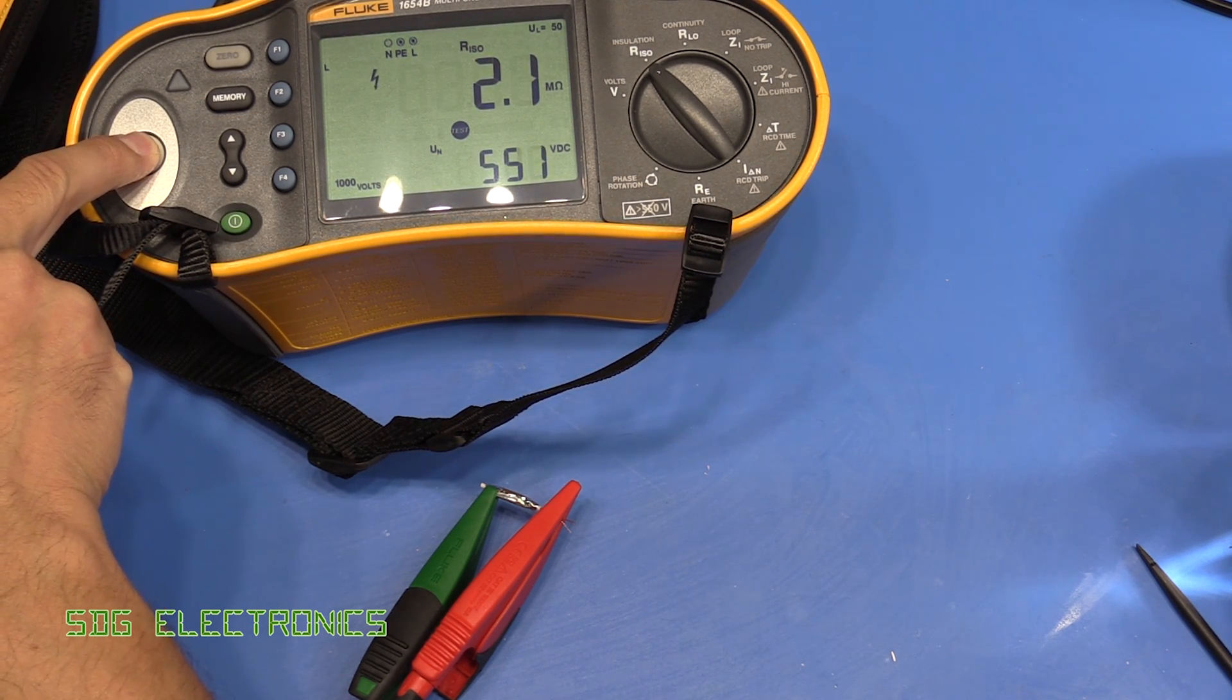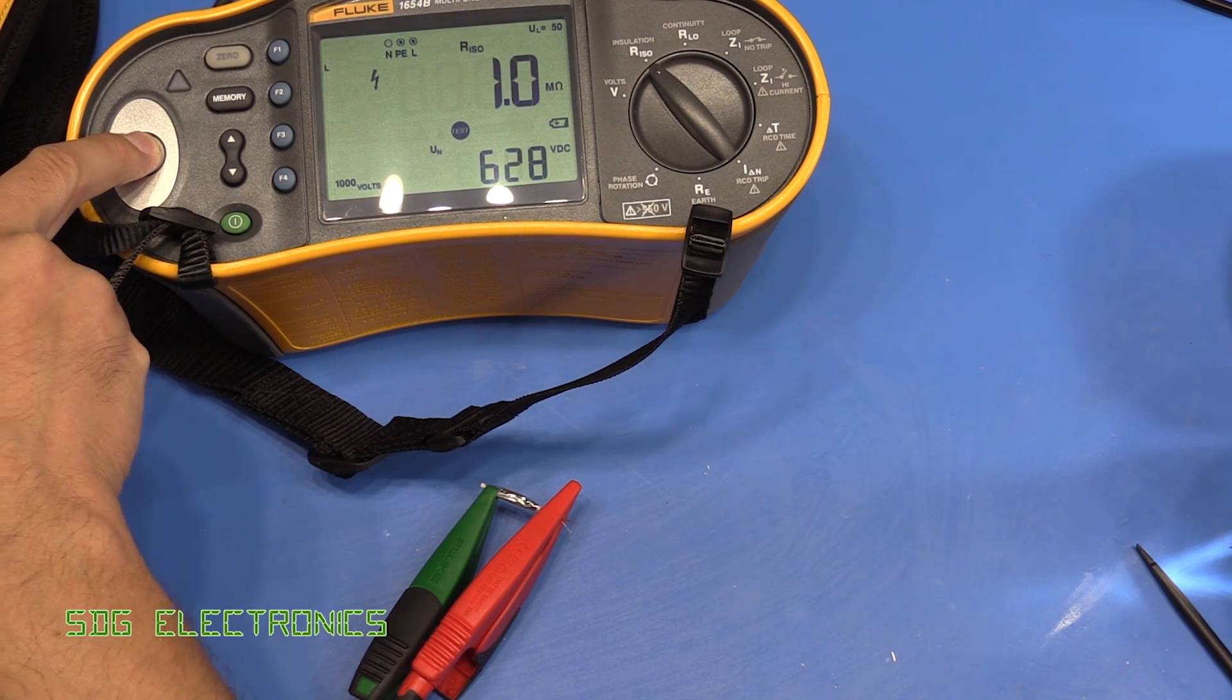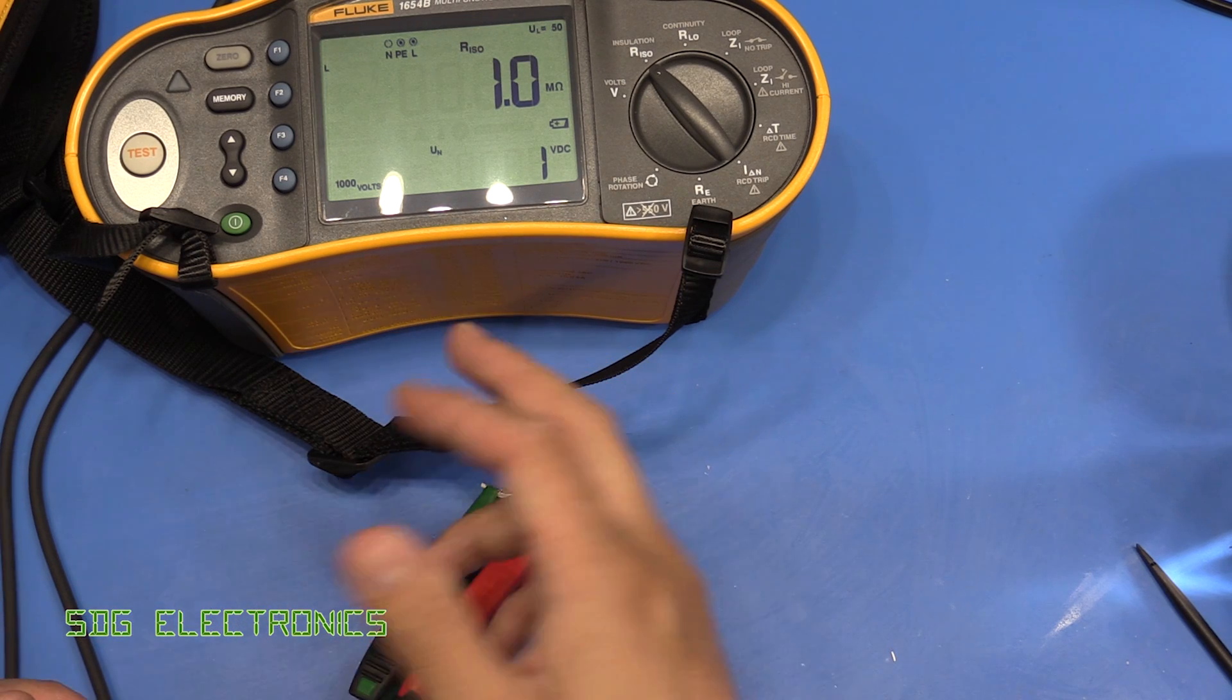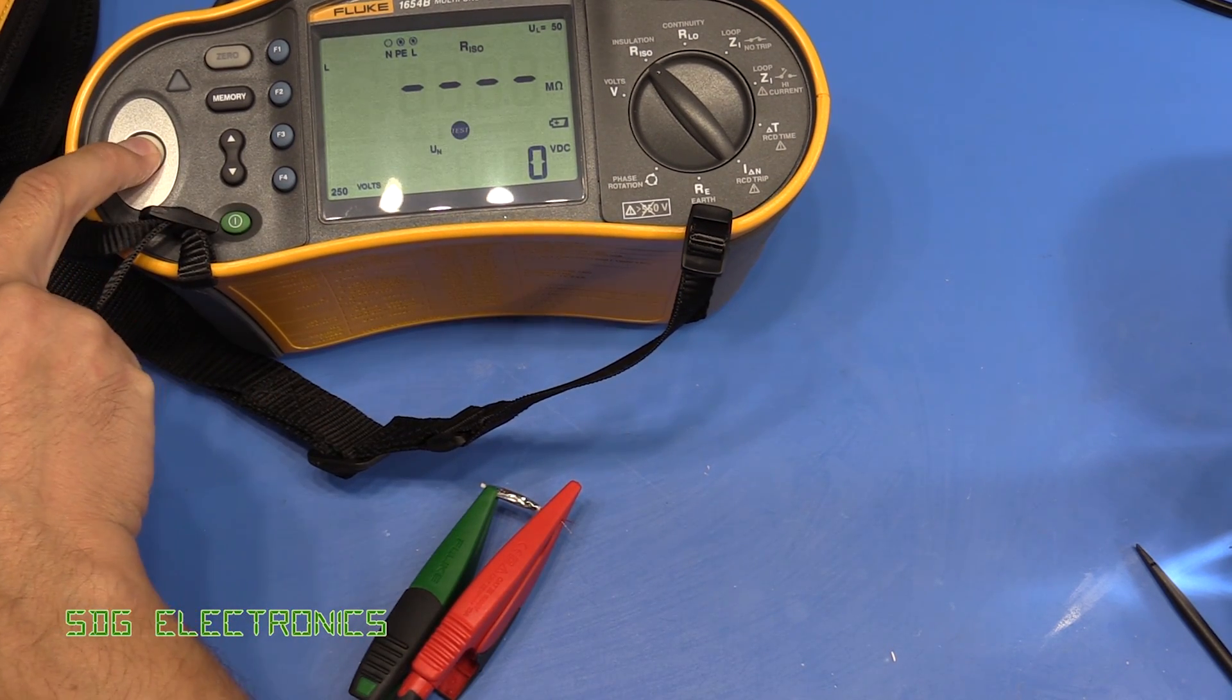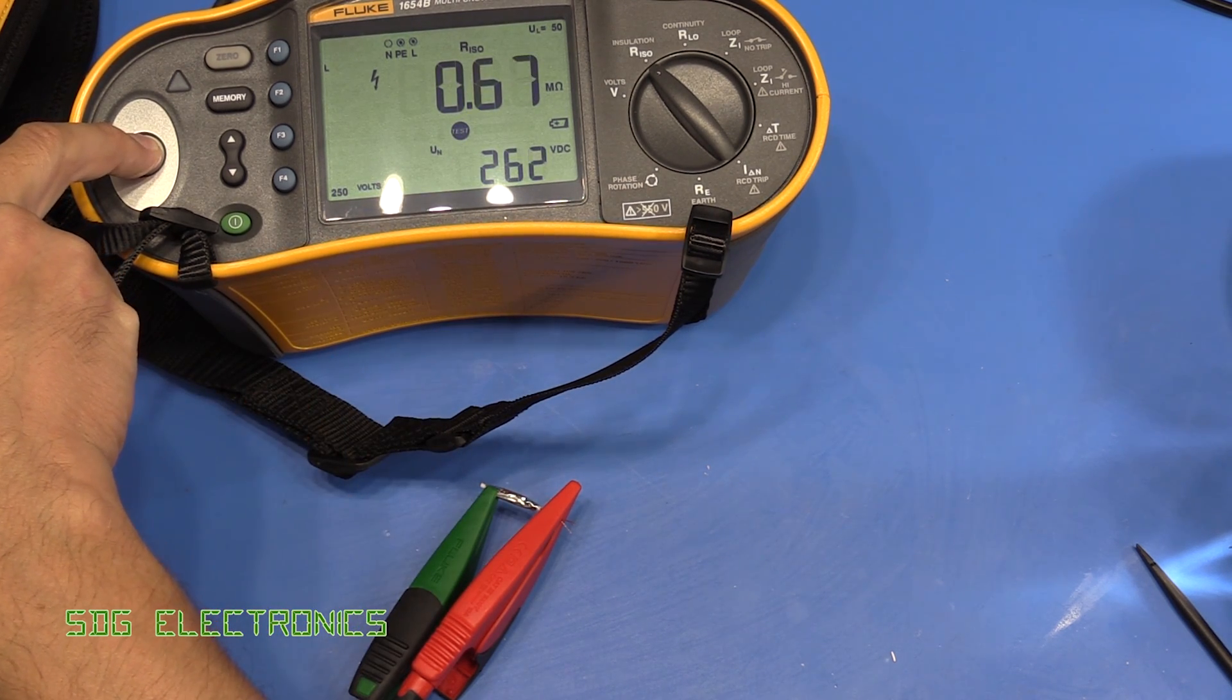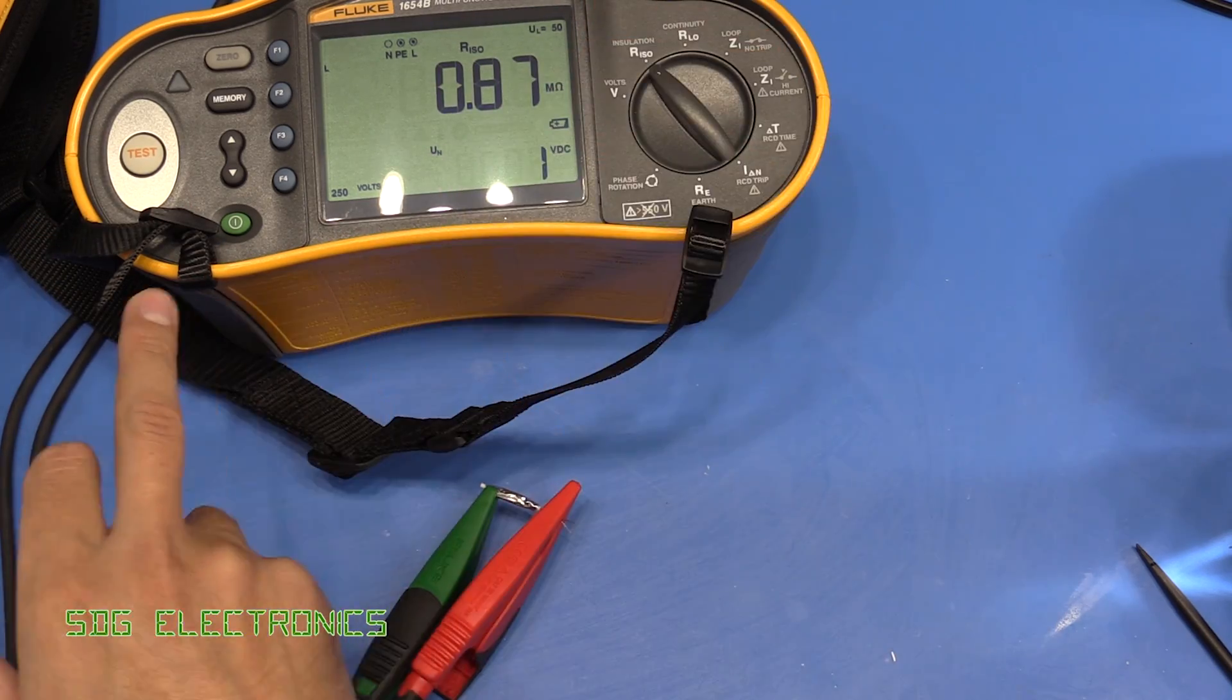You can hear it crackling away. It's reading about 2 mega ohms and going down, so we have broken down the insulation there. This suggests it's not suitable for a thousand volts. It was probably okay at 250 volts, but we are getting some lower readings.